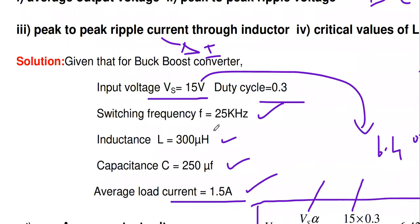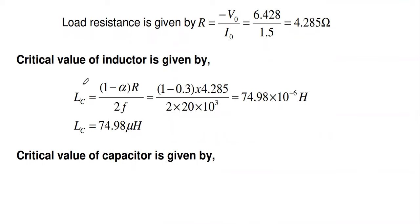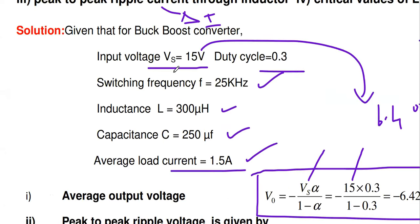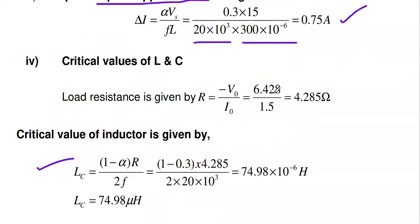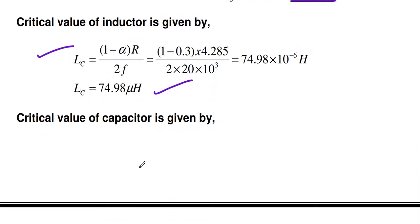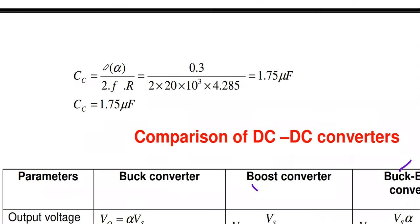For the critical value of inductor in the buck-boost converter: Lc = (1 − α) × R / (2F). The load resistance is not given, so: R = |V0| / I0 = 6.428 / 1.5 = 4.285 Ω. Substituting: Lc = (1 − 0.3) × 4.285 / (2 × 20 × 10³) = 74.98 μH. For critical capacitor: Cc = α / (2 × F × R) = 1.75 μF.